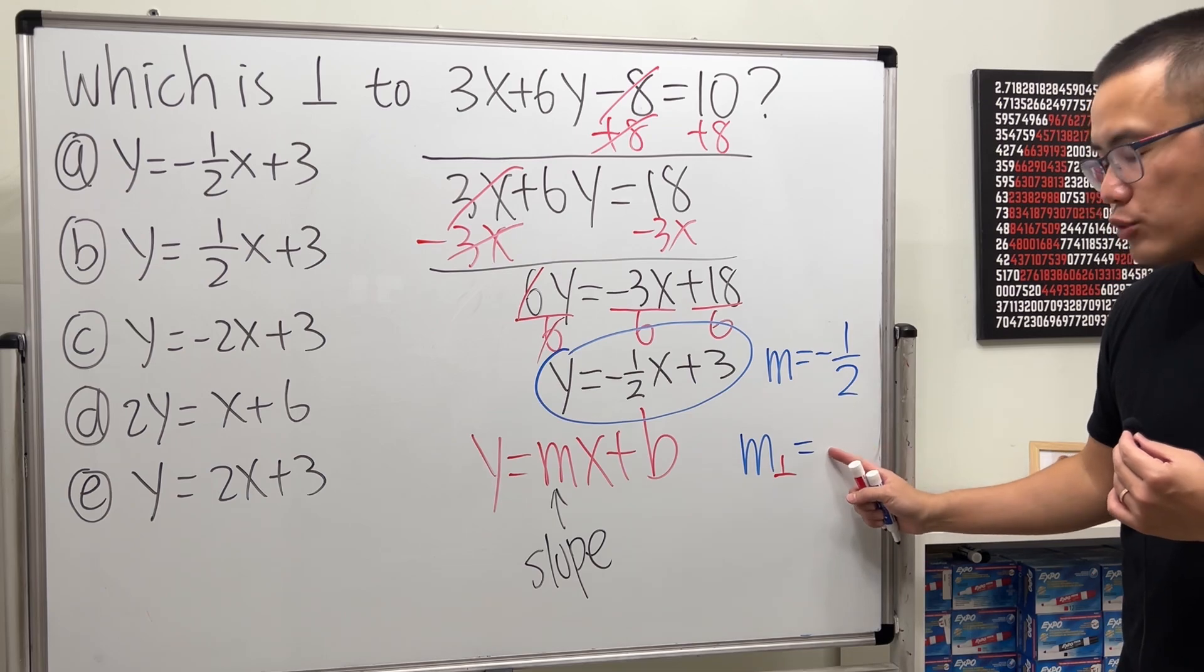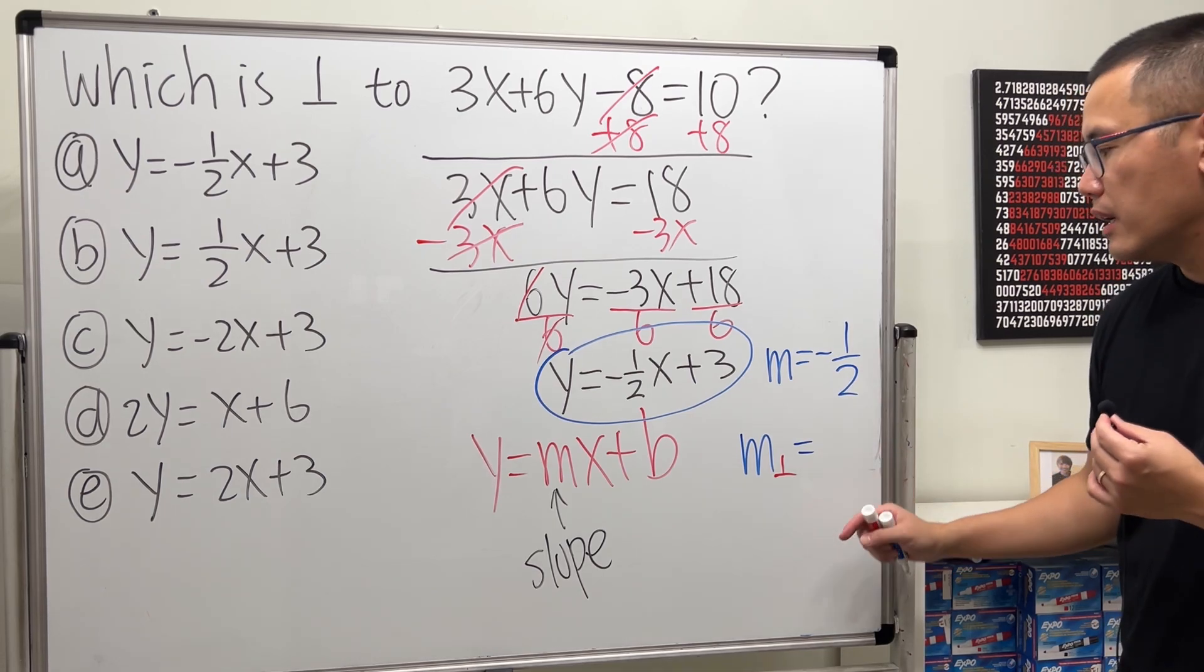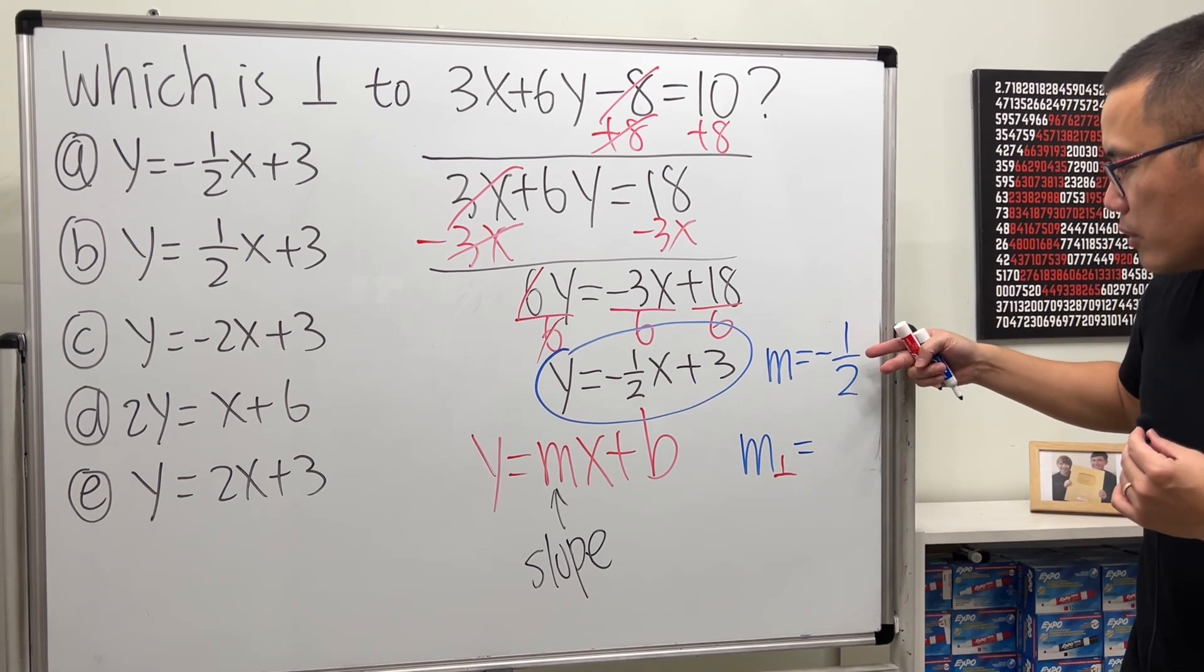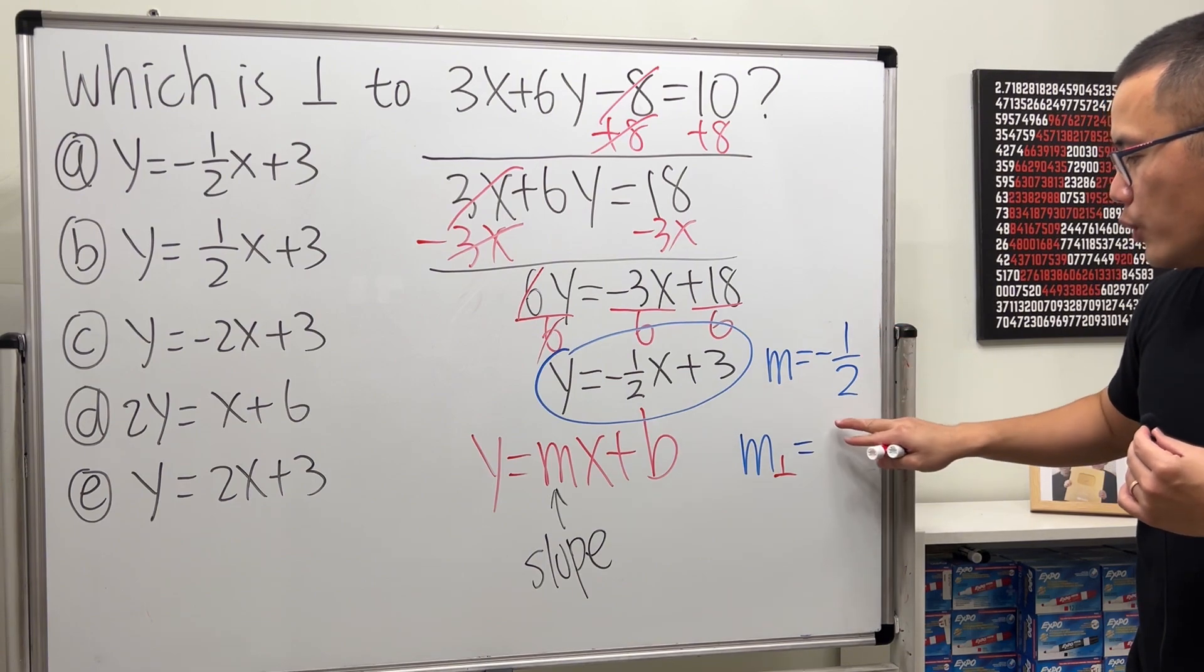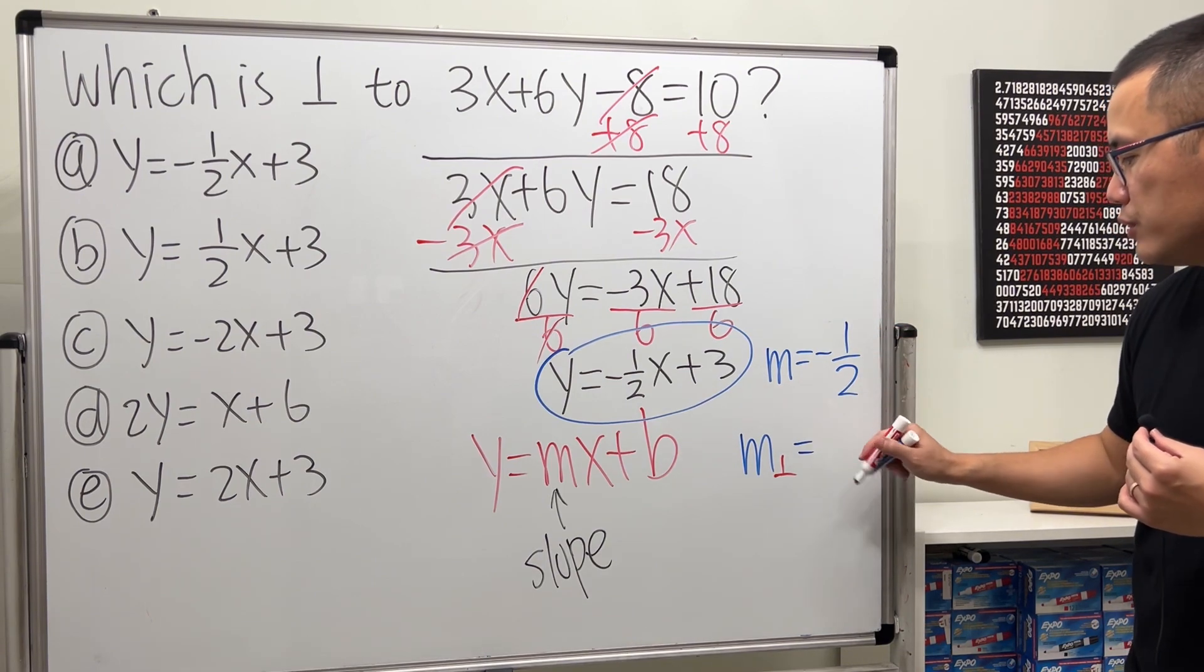This is negative, so that means this right here has to be positive. And then, we do the reciprocal. So, instead of 1 over 2, we will end up 2 over 1, which is just a 2.